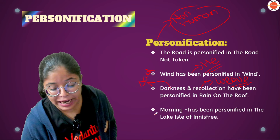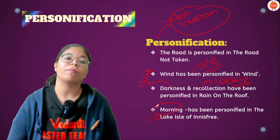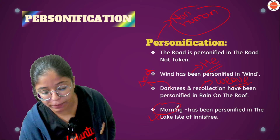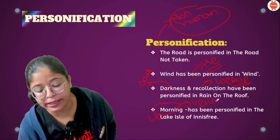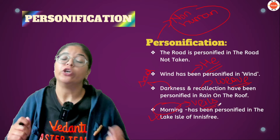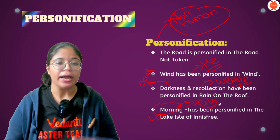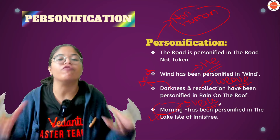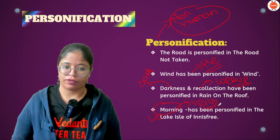Then we also personify the morning. Why? Because we say morning is in a veil — veiling is something associated with human beings. It describes a foggy morning. So that is also personification.